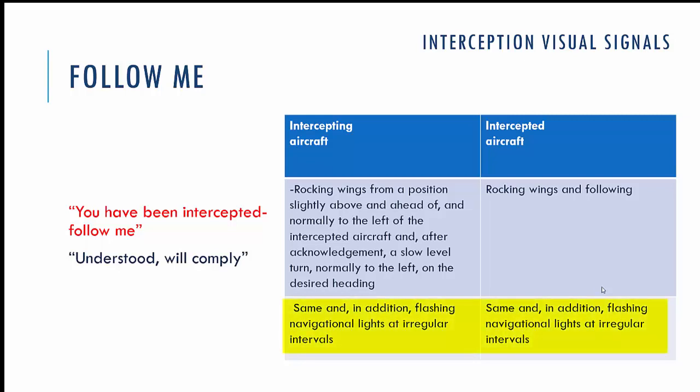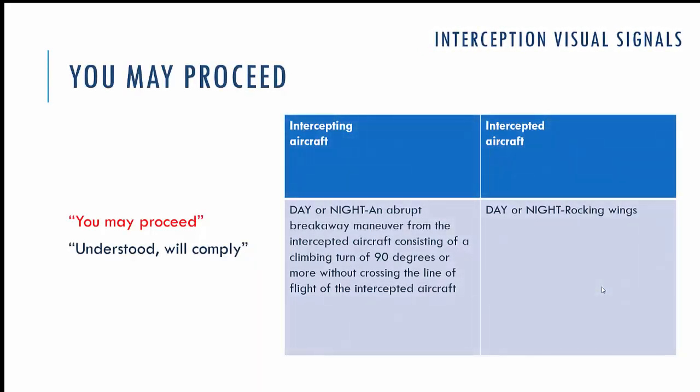At night time, the intercepting aircraft accompanies those visual signals by flashing navigation lights at irregular intervals. The intercepted aircraft responds the same way — flashing navigation lights at irregular intervals. If the situation is cleared, the intercepting aircraft gives the visual signal 'you may proceed,' which looks like a breakaway maneuver from the intercepted aircraft — a climbing turn of 90 degrees or more without crossing the line of flight. You respond by rocking wings and following your intended route — meaning 'understood, will comply.'